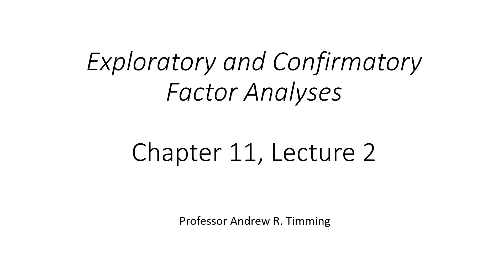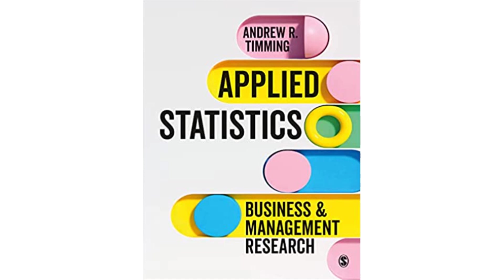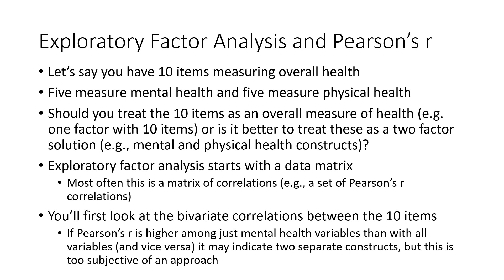So in this lecture we're going to go a little bit more deeply into the technical aspects surrounding factor analysis. Here once again you can see the textbook we're using — Applied Statistics: Business and Management Research — and I would urge you to read chapter 11 before proceeding. We're going to start with an explanation of exploratory factor analysis, and then move on to confirmatory factor analysis. The first thing I want to do is explain how exploratory factor analysis is related to Pearson's R correlation coefficient, which is a bivariate statistical test you've already learned about.